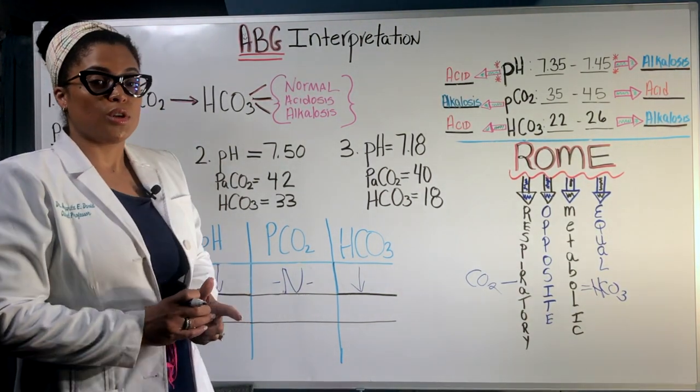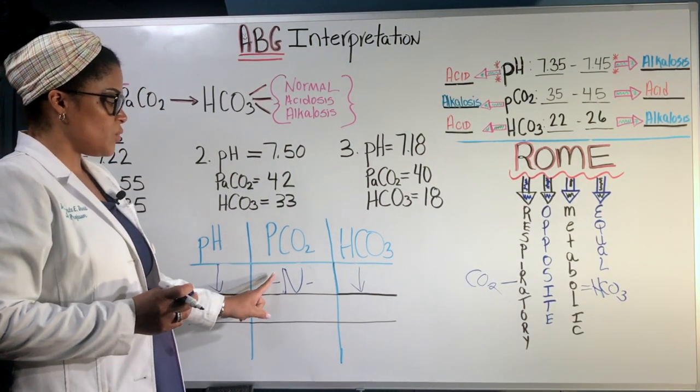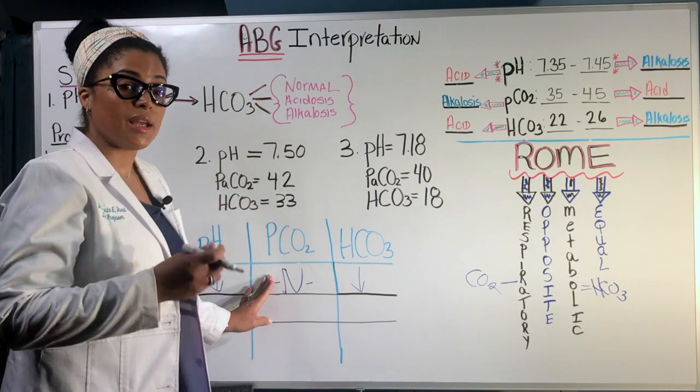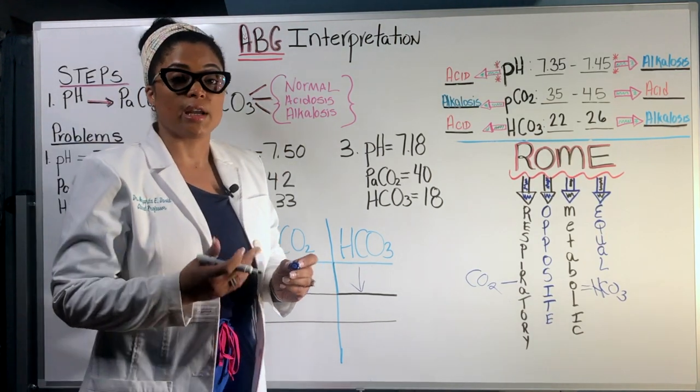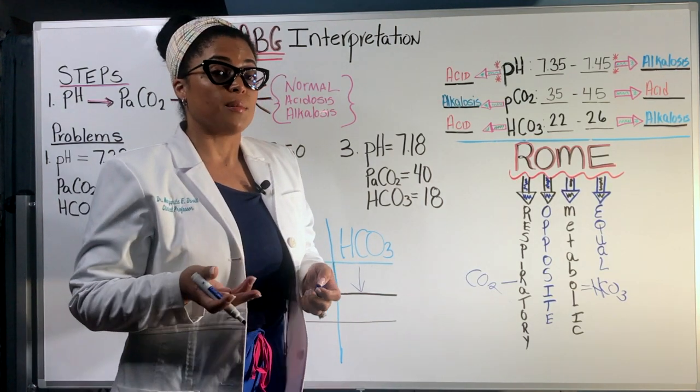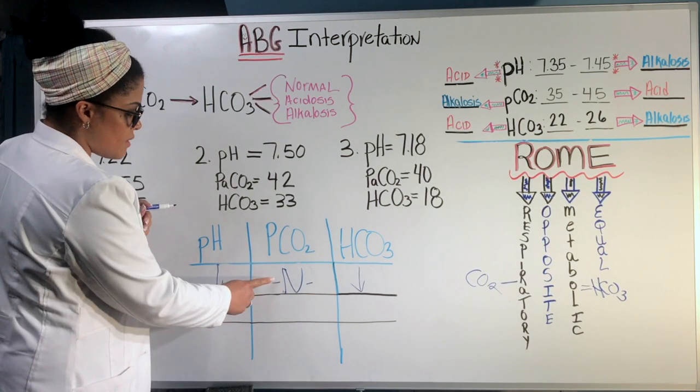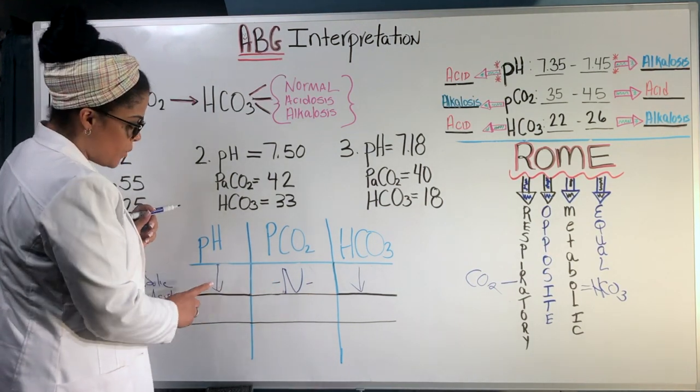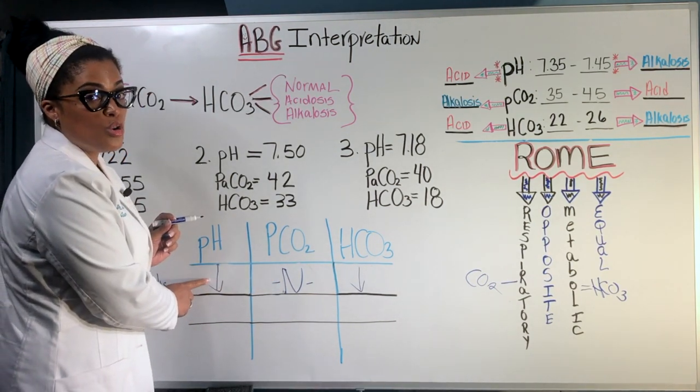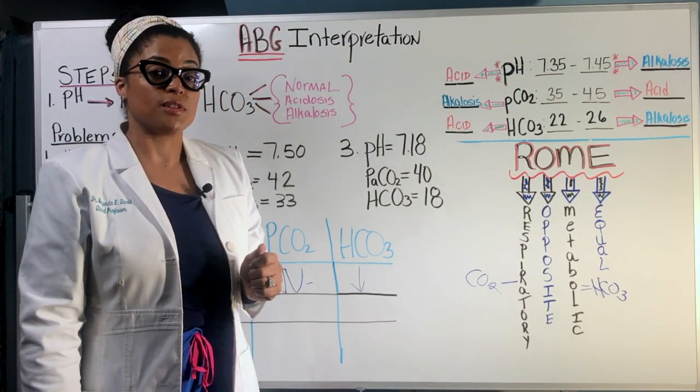The only times that you're going to see, for example, in this problem, the CO2 not be normal and be abnormal is when it is trying to help the body in order to compensate. And that's called partial compensation. When you see full compensation is that not only is the CO2 helping, but then the pH becomes normalized. So it's going to be within its normal range. At that point, you're going to have full compensation.